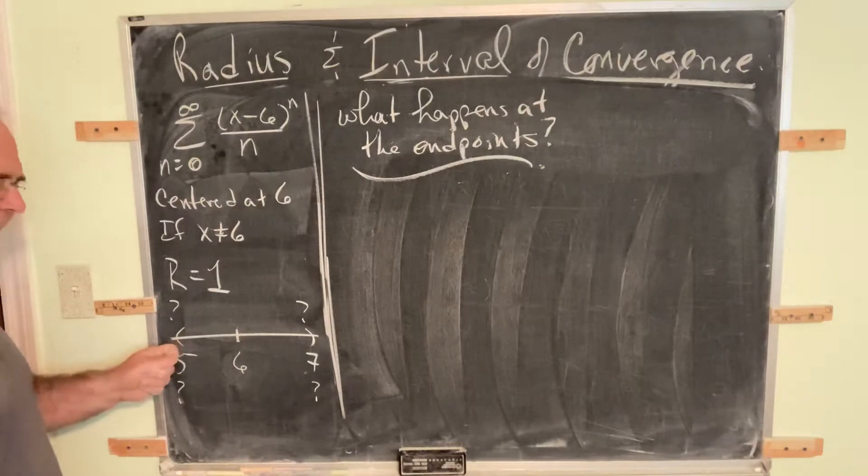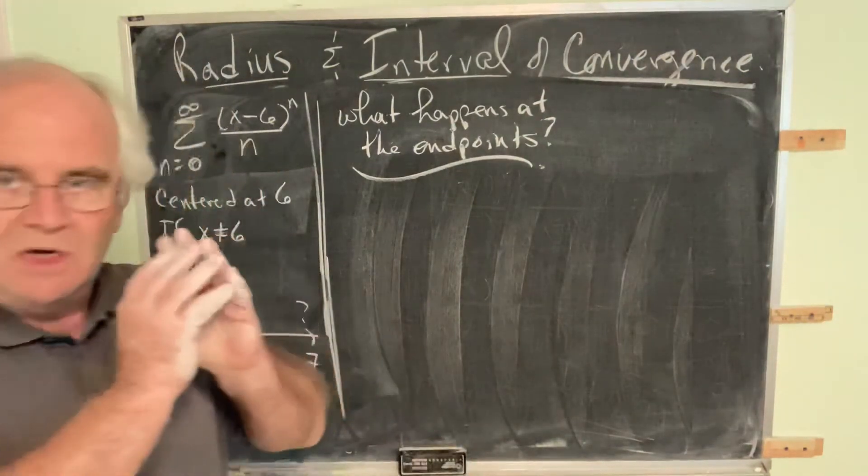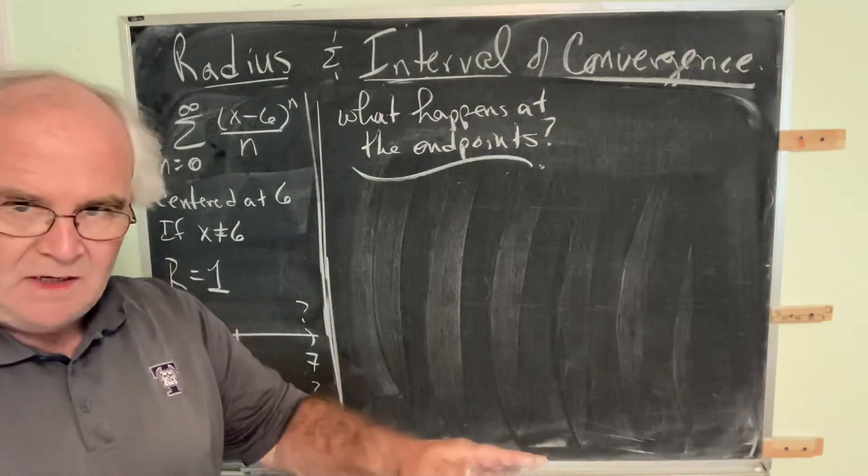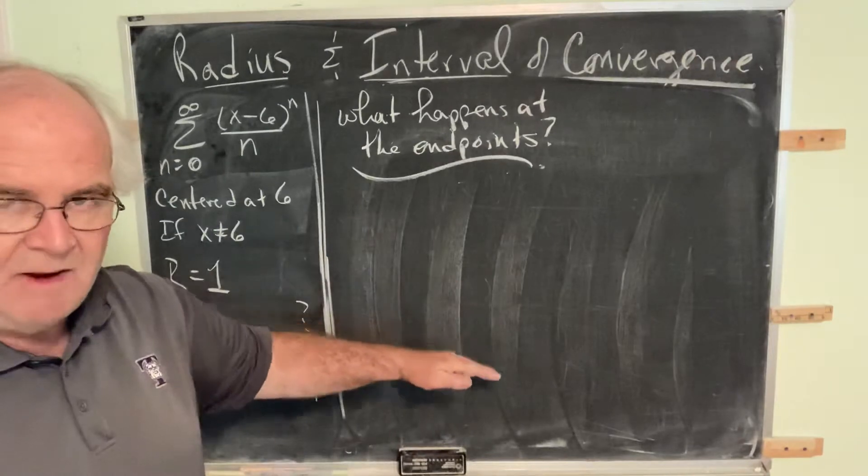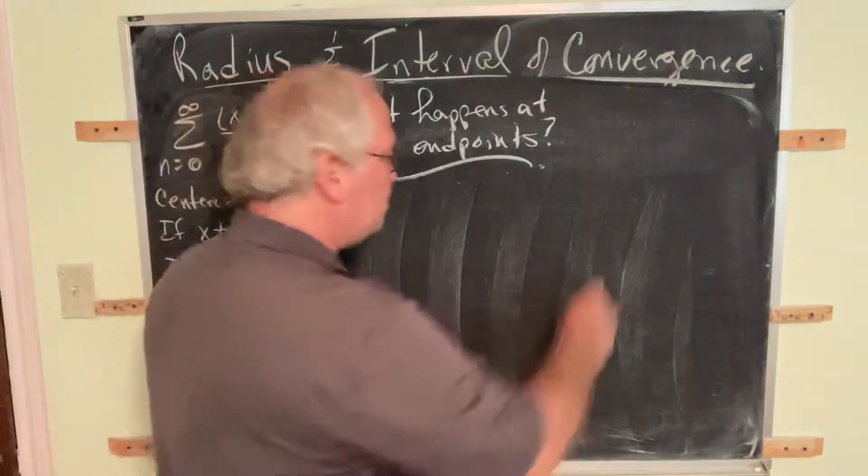But what we don't know is what's happening at the endpoints. It turns out there are four possibilities, and we don't know going in which one is going to be coming out. There is nothing for it. You need to do this procedure. There's no way to just look and know. You must check.